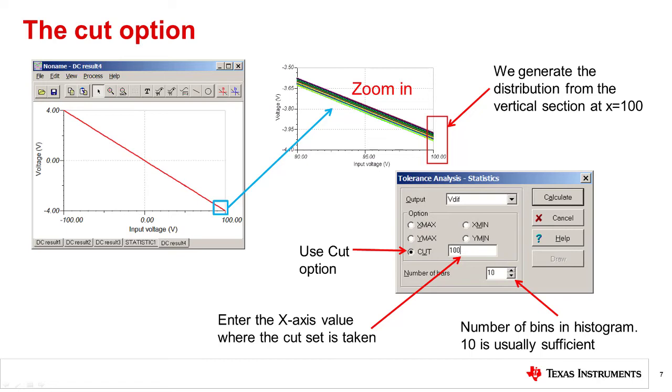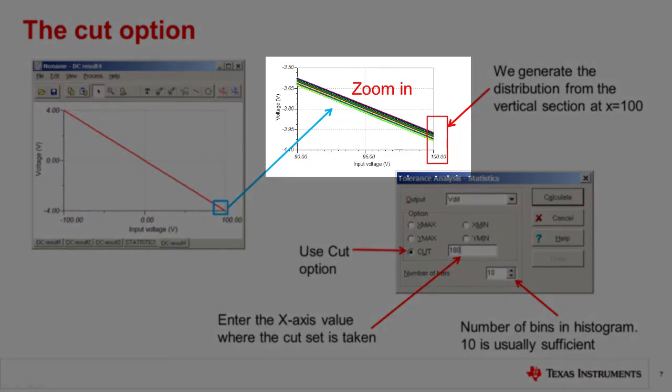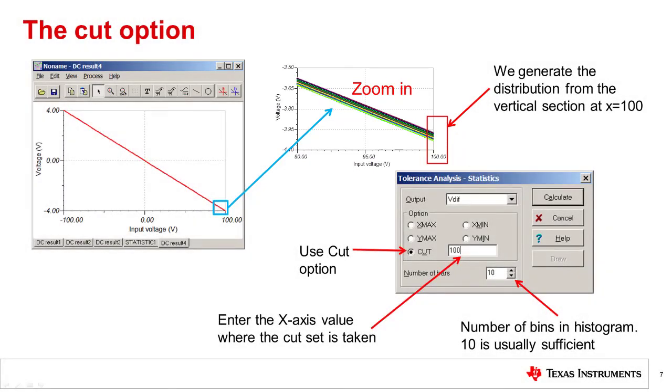It is easier to understand the vertical cut set when looking at a zoomed-in version of the transfer characteristic. In this graph, you can see that there are many closely spaced curves that correspond to the different random resistor values.